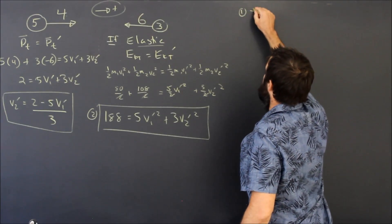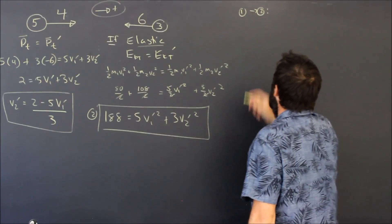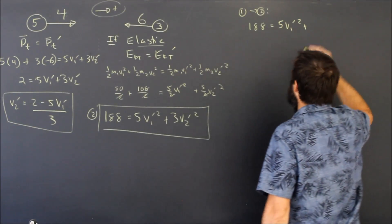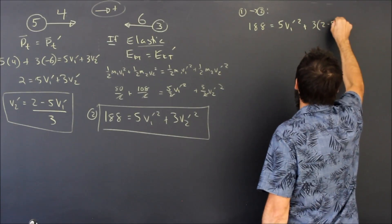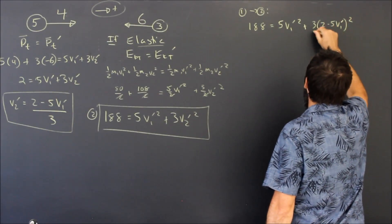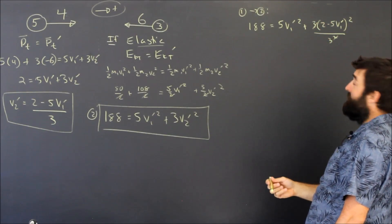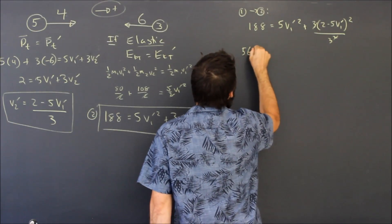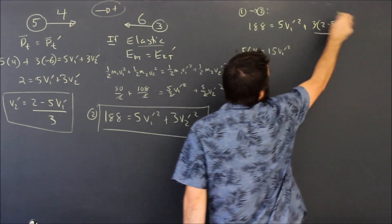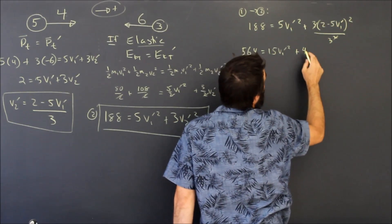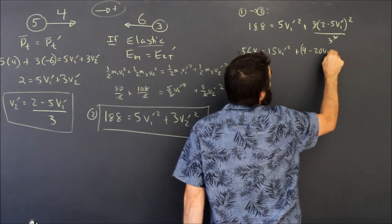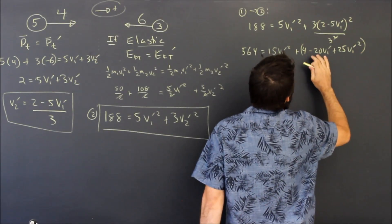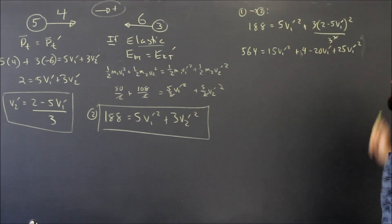And I'm going to take equation number one and sub it into equation number two. I'm going to do that up here. Equation one into two. And what does that give me? It gives me a hundred and eighty eight is equal to five v one prime squared plus three, open bracket, two minus five v one prime all squared over three squared. So one of those threes is going to cancel. I'm going to multiply everything by three. A hundred and eighty eight times three is five hundred and sixty four and that equals fifteen v one prime squared. And I'm going to expand this guy. That's four. I'm going to put a bracket around it. Plus four minus twenty v one prime plus twenty five v one prime squared. And all of that, oh I don't need to put a bracket around it. It's all over three but I've already moved my three. No problem.